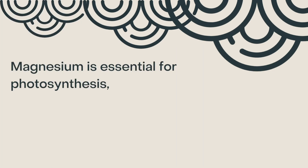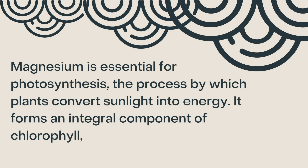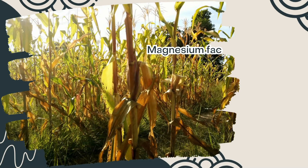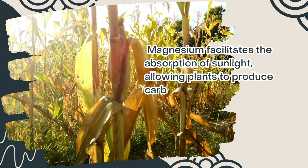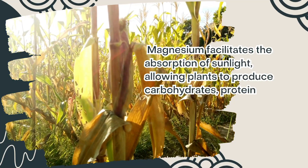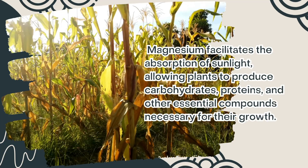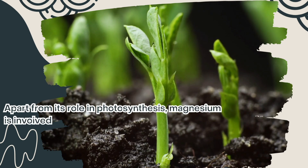Magnesium is essential for photosynthesis, the process by which plants convert sunlight into energy. It forms an integral component of chlorophyll, the pigment responsible for capturing light energy. Magnesium facilitates the absorption of sunlight, allowing plants to produce carbohydrates, proteins, and other essential compounds necessary for their growth.